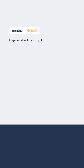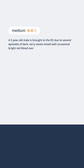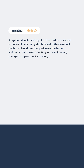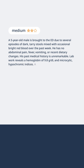A five-year-old male is brought to the ED due to several episodes of dark tarry stools mixed with occasional bright red blood over the past week. He has no abdominal pain, fever, vomiting, or recent dietary changes. His past medical history is unremarkable. Lab work reveals a hemoglobin of 9.8 grams per deciliter and microcytic hypochromic indices. An abdominal exam is benign with no tenderness or palpable masses.